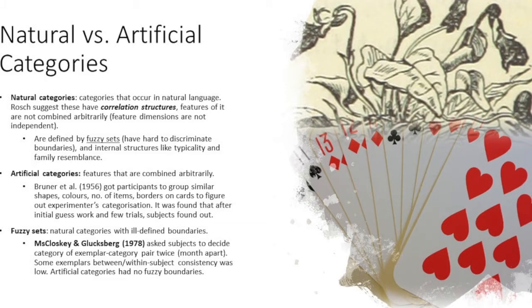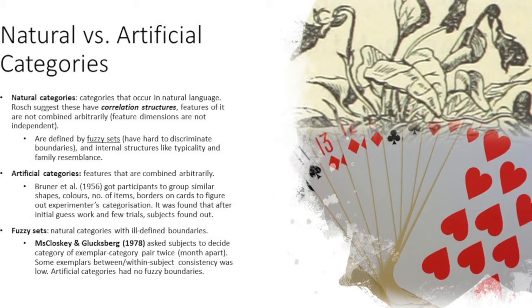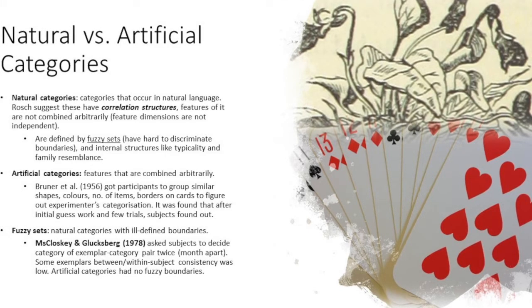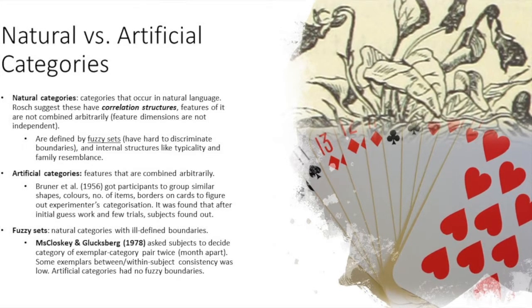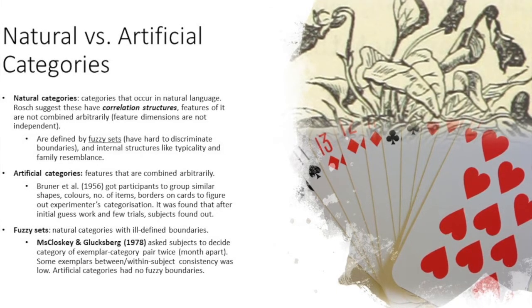Natural categories are categories that occur in natural language. Rosch suggested that these have correlation structures in which features are not combined arbitrarily. Featured dimensions are not independent.